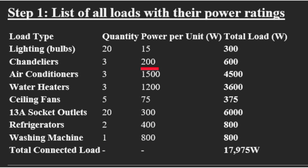Three chandeliers at 200 watts each give us a total of 600 watts. For air conditioners, there are three and we assume each will consume 1,500 watts, so three of them will give us 4,500 watts. These are assumptions.